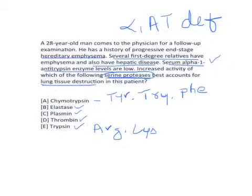Option D is thrombin, also a serine protease. The function of thrombin is to convert fibrinogen into fibrin. Thrombin exists in its inactive form as prothrombin, present in the bloodstream. When the clotting process needs to occur, prothrombin is converted to thrombin, which then converts fibrinogen into fibrin to form a clot.